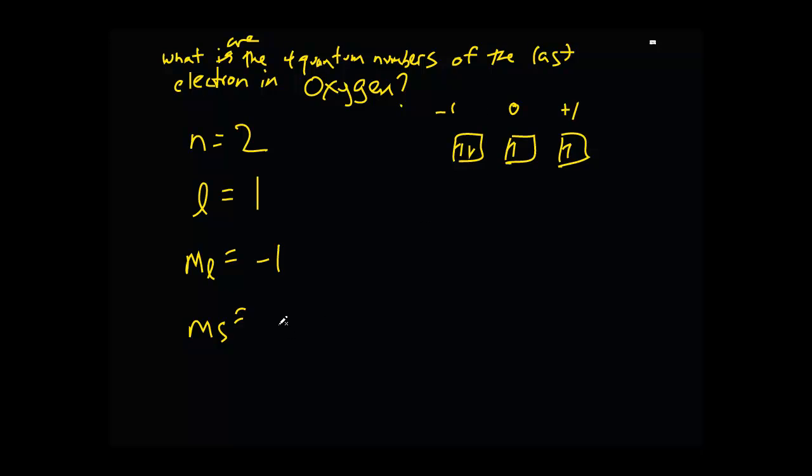And finally, your spin on that last electron is going to be spin down, negative 1 half. So, your quantum numbers of the last electron in oxygen is going to be 2, 1, negative 1, negative 1 half.